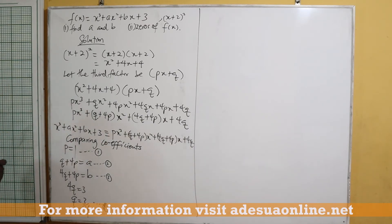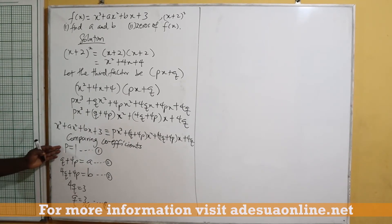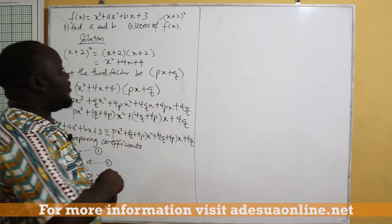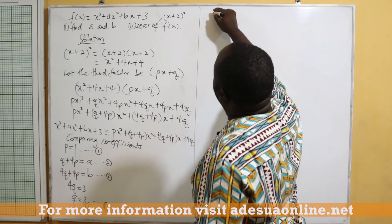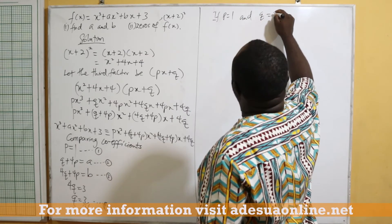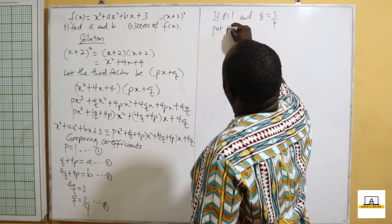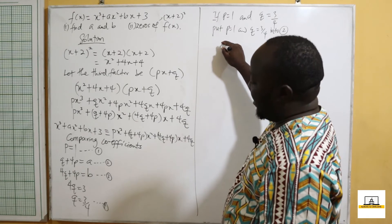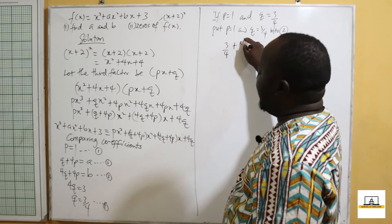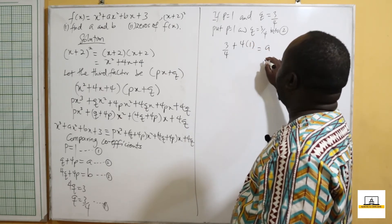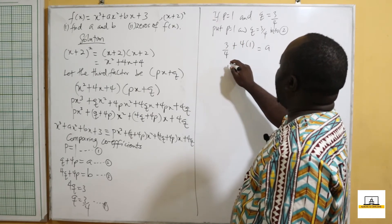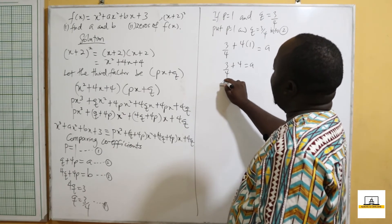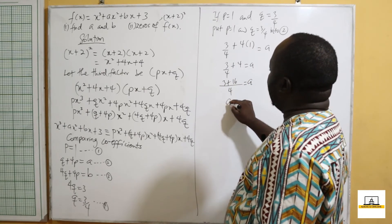We have now solved for p and q: p equals 1 and q equals 3 over 4. To find a, we substitute into equation 2: q plus 4p equals a, so 3 over 4 plus 4 times 1 equals a. The LCM is 4, giving us 3 plus 16 over 4, so a is equal to 19 over 4.